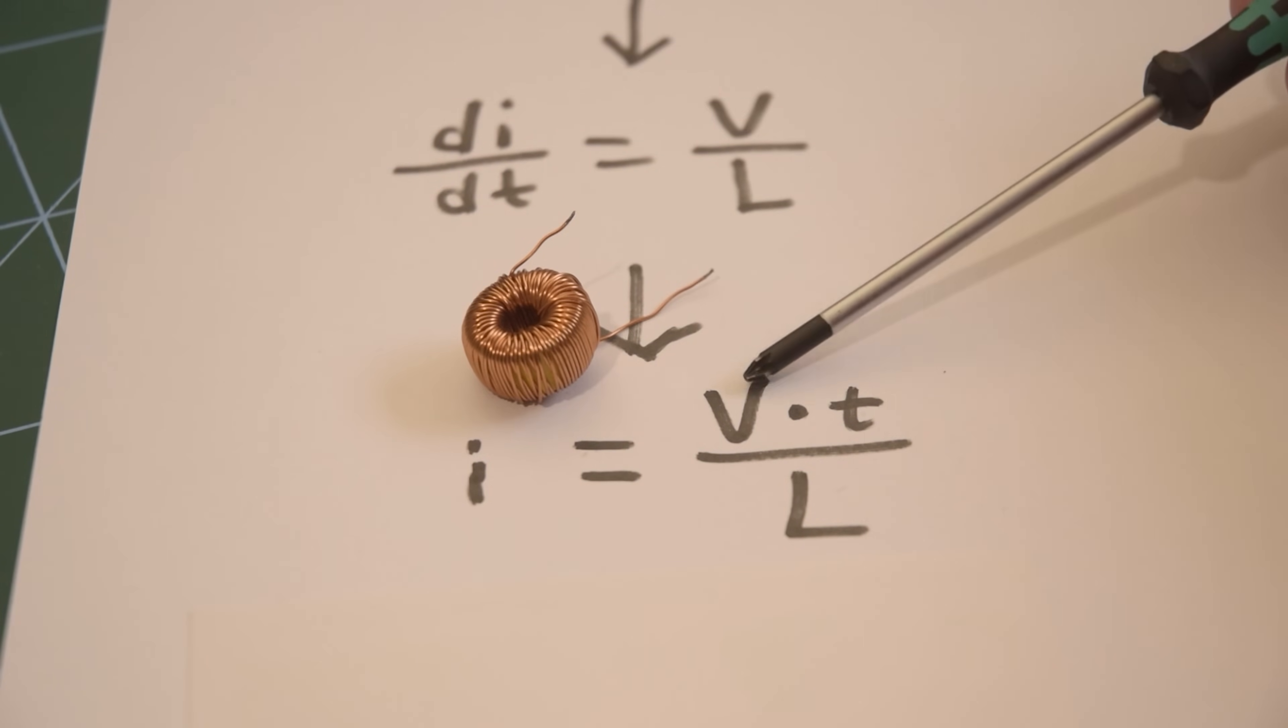But that then raises the next problem, which is that, as we can see on the equation above, if we keep the voltage the same, the current's just going to keep on rising. So what we end up doing is switching this voltage on and off to try and maintain the current fairly close to the level that we want. And to do that we make use of hysteresis.